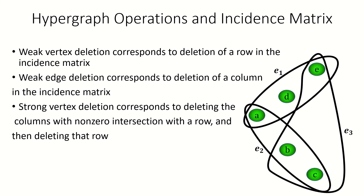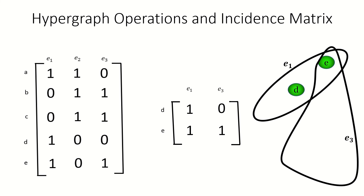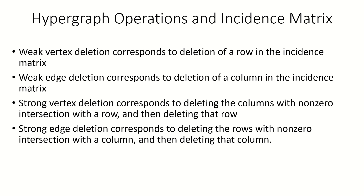Finally, let's look at strong edge deletion. As an example, let's strongly delete edge e sub 2 from this hypergraph. Here's the result along with its incidence matrix. Notice how the new incidence matrix can be formed from the original by deleting each row with a 1 in the intersection with the column corresponding to e sub 2, followed by deleting the column corresponding to e sub 2. That's the effect of strong edge deletion on the incidence matrix — it deletes each row with a 1 in the column corresponding to the deleted edge, and then deletes that column.